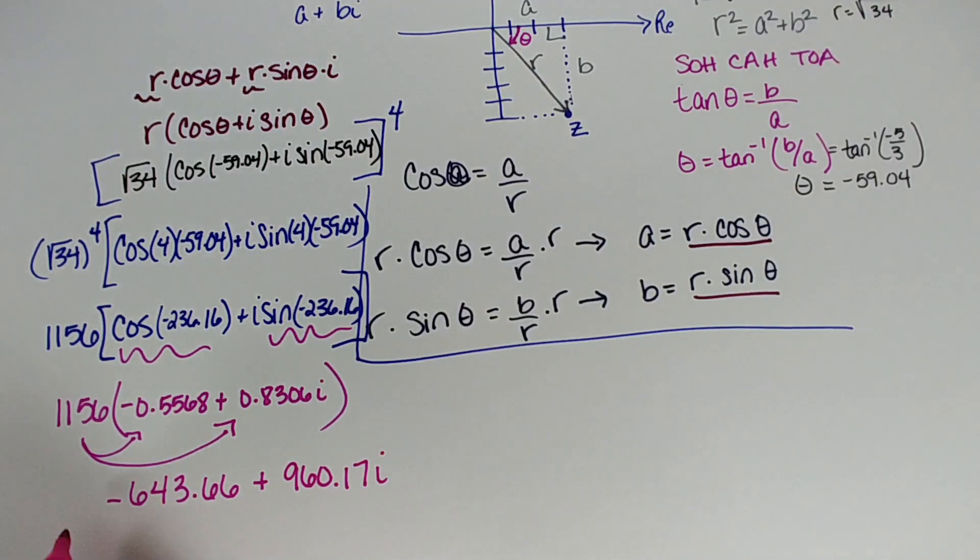And so that is back in rectangular form. 3 minus 5i raised to the fourth power. I hope that helped. It was a really long problem. If you have questions, pop them into the comment section and be sure to subscribe to our YouTube channel because this is what we do. You send in problems and I solve them. Thanks for watching.